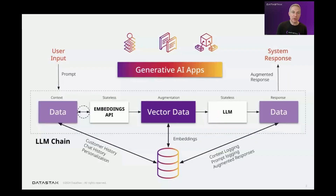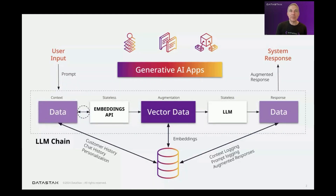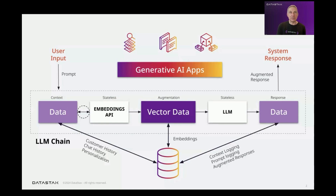But before we get into the demos, let's just do a couple of definitions. So first, what is retrieval augmented generation? Retrieval augmented generation or RAG is a technique that combines the strengths of large language models with external knowledge sources to improve the accuracy and reliability of text generation.